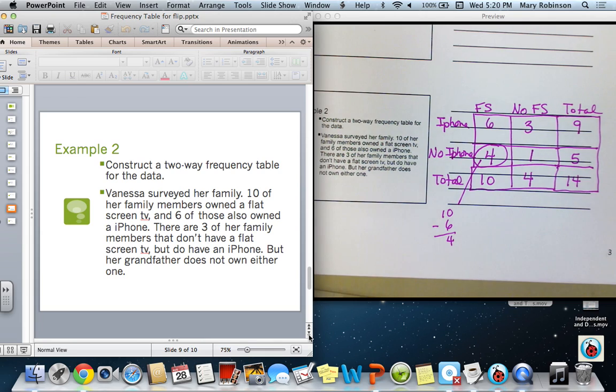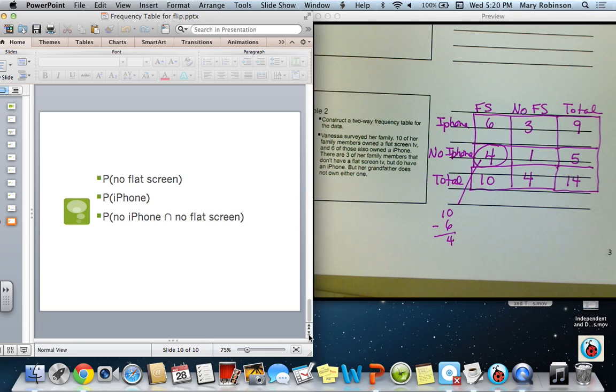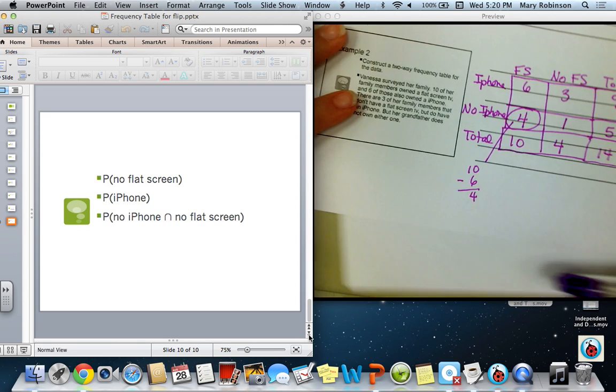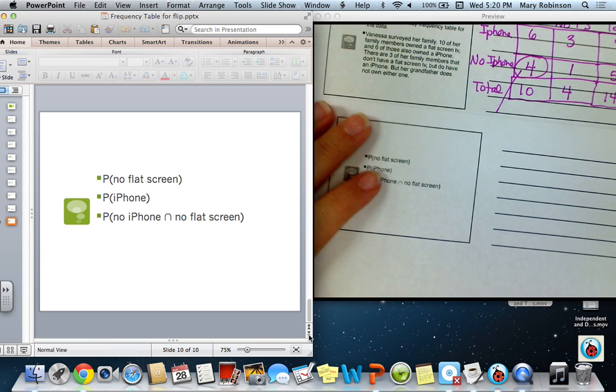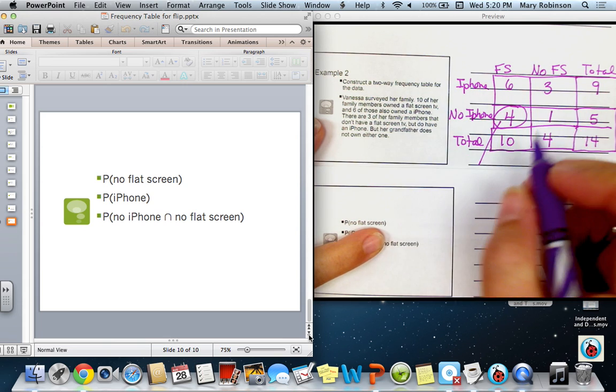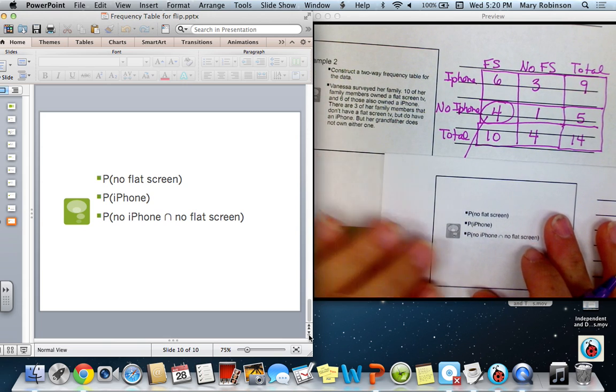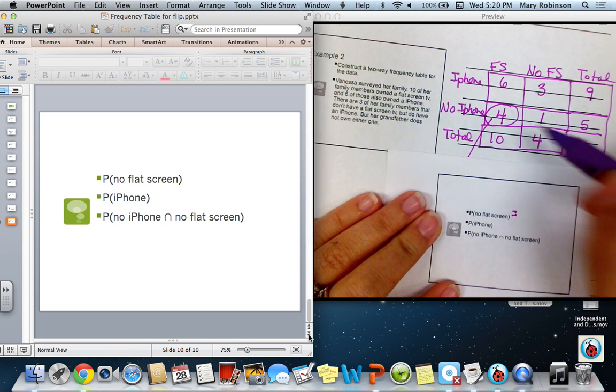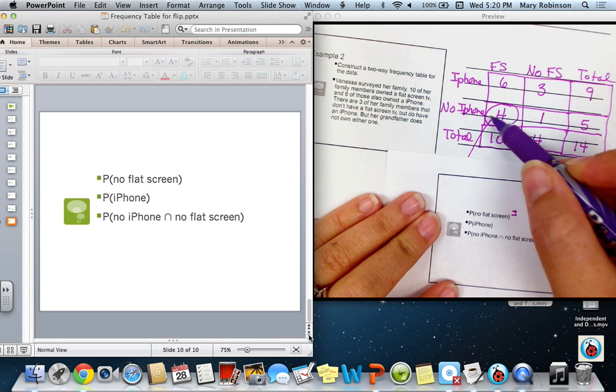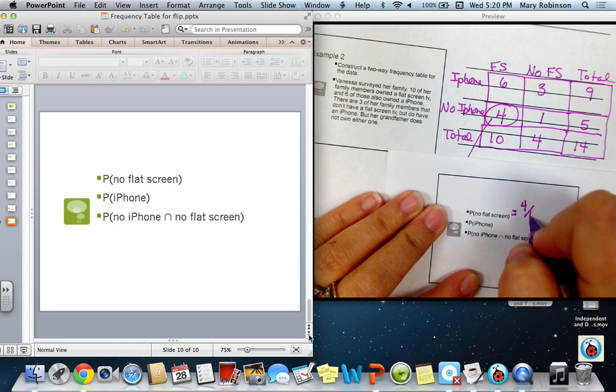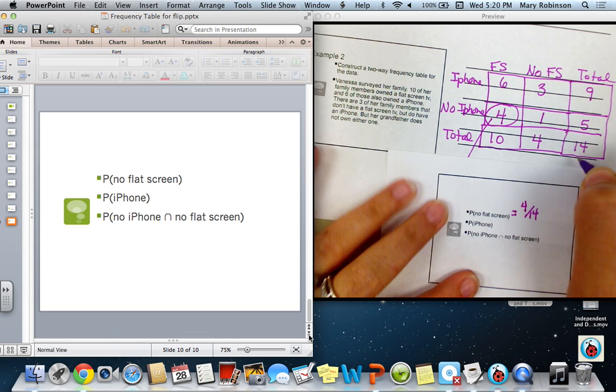Now that we have that information, we can use it to find some probabilities. So, what we are asked to do next is to find the probability that someone does not own a flat-screen. So, the probability of no flat-screen is equal to how many did not have a flat-screen at all? That was a total of four. So, four out of fourteen. Notice your denominator is always this number here in this box, the total total.